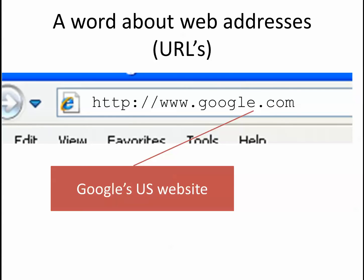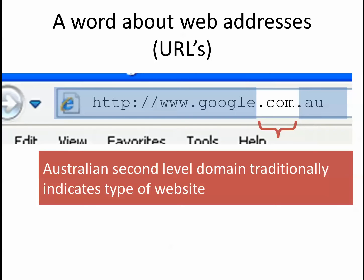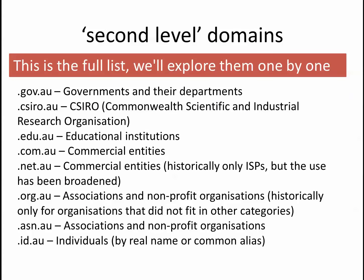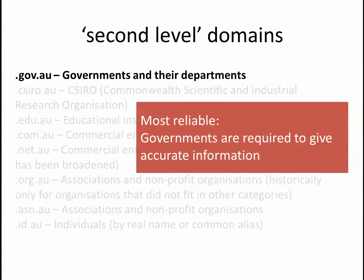In Australia, the second level domain — between the last dot and the dot before that — traditionally tells you what type of website it was. The plan was that everything would be logically placed into one of these spaces. The .gov.au sites are the governments and their departments — these are the most reliable ones. If we're looking for legal info, that's the good stuff, because the government knows it would be pretty negligent of them to keep out-of-date information on their website.